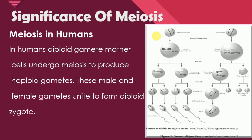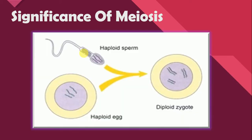In gamete mother cells, 46 chromosomes are present. After meiosis, when sperms and ova are formed from them, the number of chromosomes remains half compared to the gamete mother cells. Means in those sperms and eggs, the number of chromosomes is 23. When a sperm fertilizes the egg, the number of chromosomes in the zygote will again become diploid — sperm has 23 chromosomes and the egg also has 23 chromosomes. When these two unite, the number in the zygote will double — that will be 46.